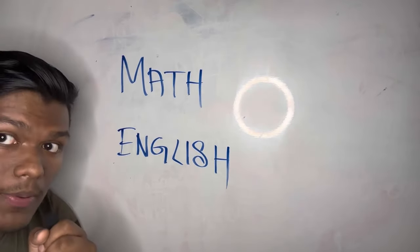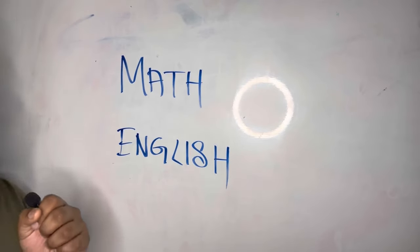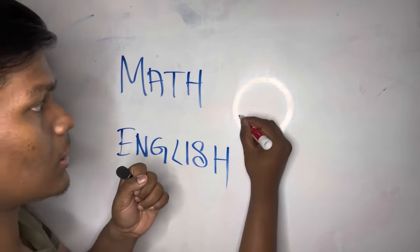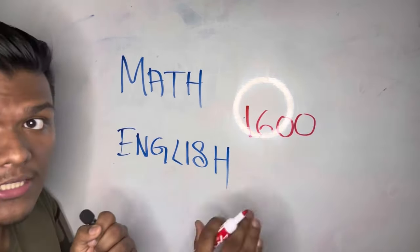The SAT has two papers: Math and English. Let's look at the number distribution and time marks. First, total marks: 1,600 points.